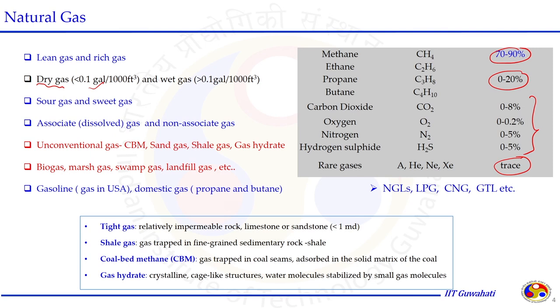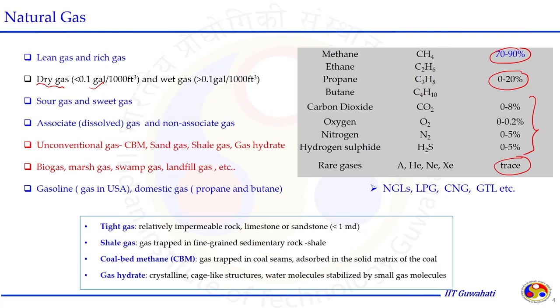Other classifications of natural gas include biogas, marsh gas, swamp gas, and landfill gas. An important note: when going to a gas station in the United States, you get gasoline — that is petrol, not natural gas. Similarly, domestic LPG is propane and butane, which is a fraction of natural gas — more valuable than methane — used in domestic applications. Tight gas, shale gas, coal bed methane, and gas hydrates are unconventional natural gas sources that will be discussed in detail at the end of this course.